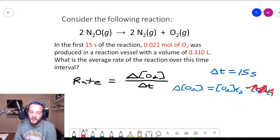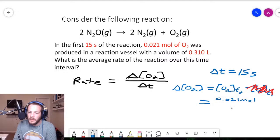Which is simply going to be equal to, I'll go back to the blue pen here, equal to the amount of oxygen in moles, which is 0.021 moles divided by the volume of the reaction vessel, which is 0.310 liters. And so 0.021 divided by 0.310.